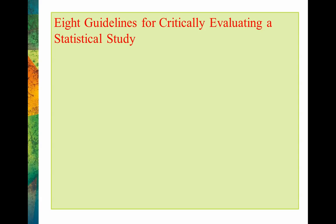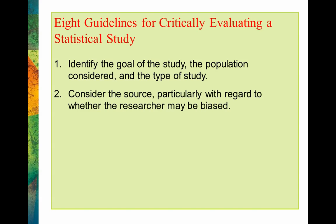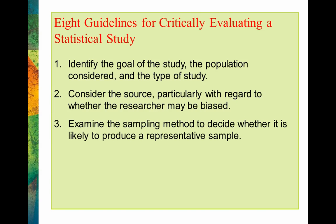So real quickly, here are the guidelines discussed in your textbook, which are really good. We want to do things like identify the goal of the study, the population that's considered, the type of study that was done — whether it was a true experiment or a correlational or observational study. We'll also want to consider the source of the study to determine how credible they are and to determine if they might have some ulterior motives.